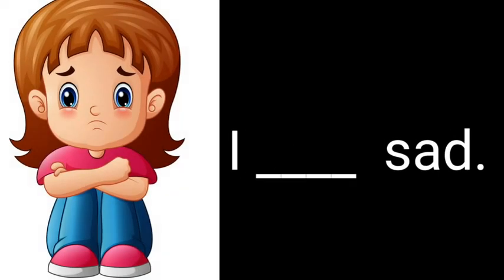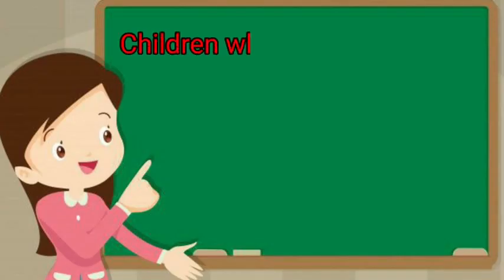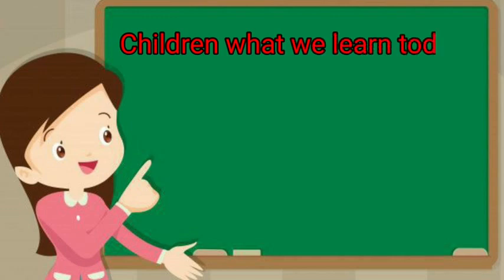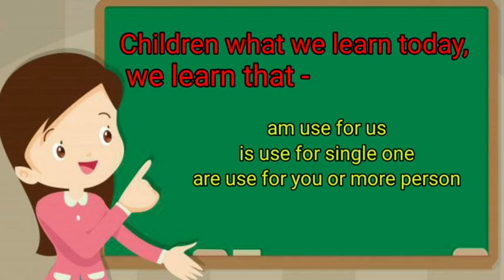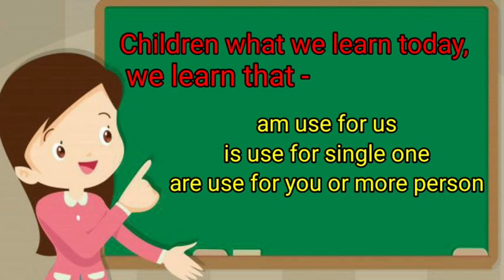I ___ sad. Ab jaano 'I' ke saath kya lagta hai? Yes, 'I' ke saath 'am' — I am sad. Children, what did we learn today? We learned that 'am' is used for I, 'is' is used for a single person, and 'are' is used for you or more than one person.